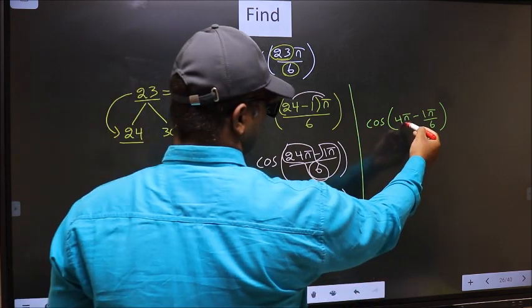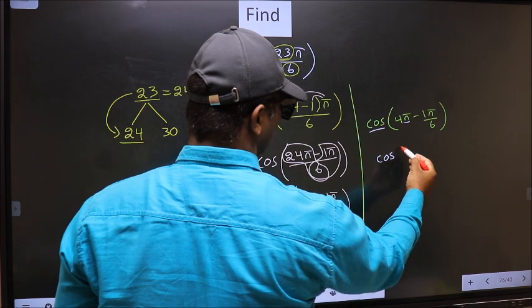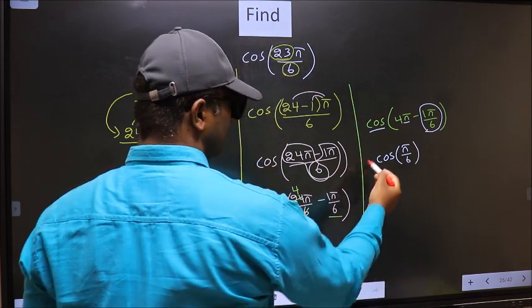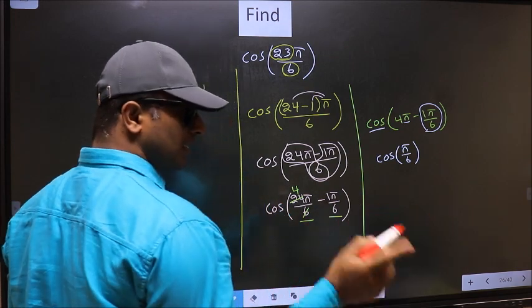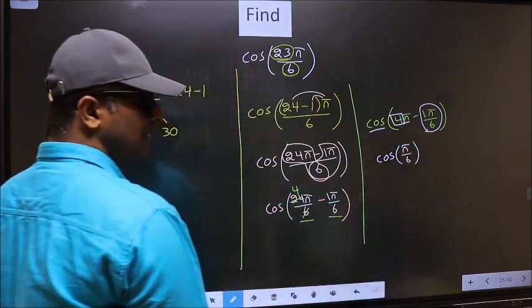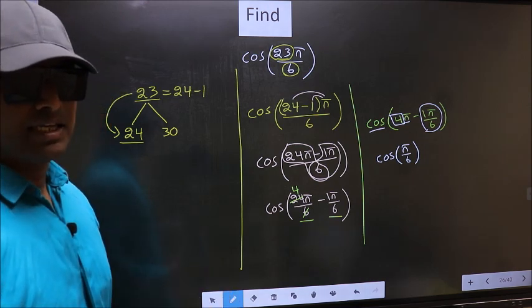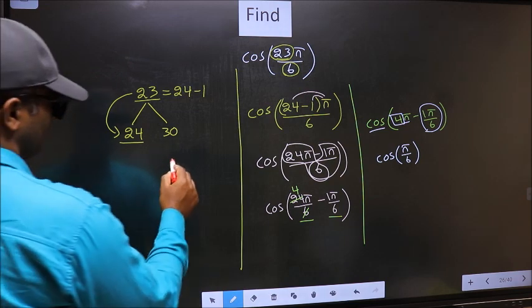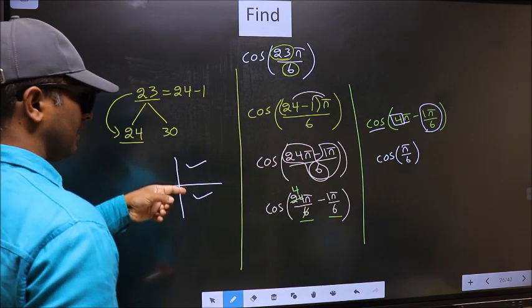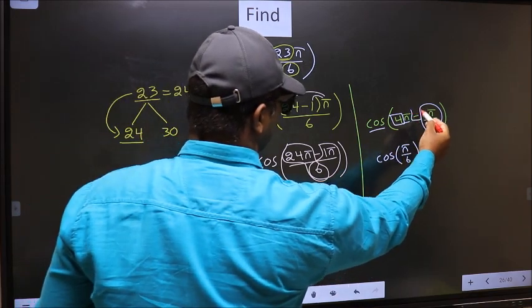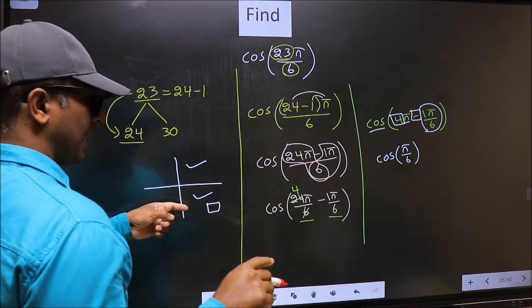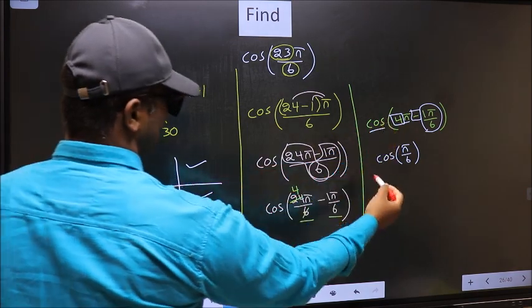Next. Here we have π, so cos is not going to change — it will remain cos — and inside we get the angle π/6. Now the question arises: will we get plus or minus here? To answer that, you should look at the number before π, which is 4. And 4 is even. All even multiples of π lie either in the 1st or 4th quadrant. To check which quadrant it lies in, look at this symbol — here we have negative — that means the angle lies in the 4th quadrant. In the 4th quadrant, cos is positive, so you should put plus.